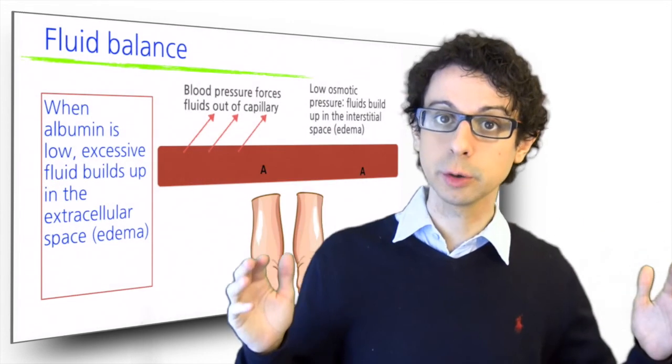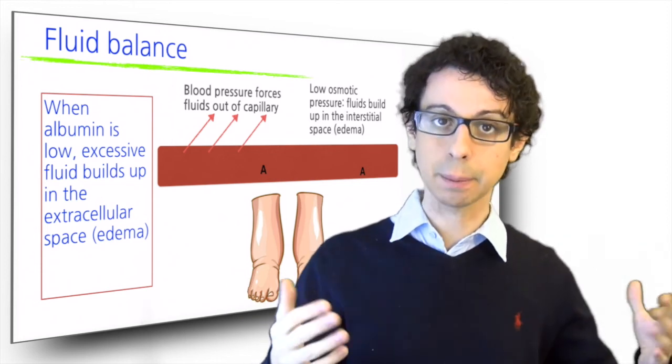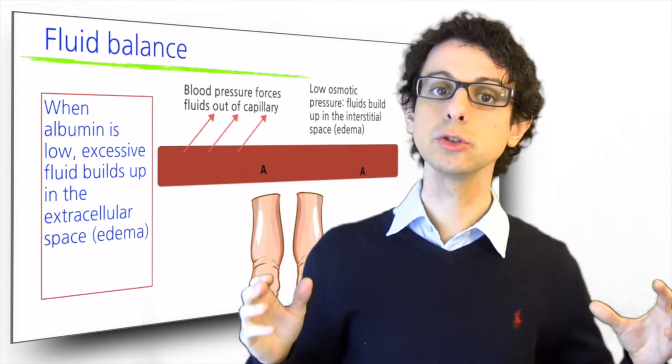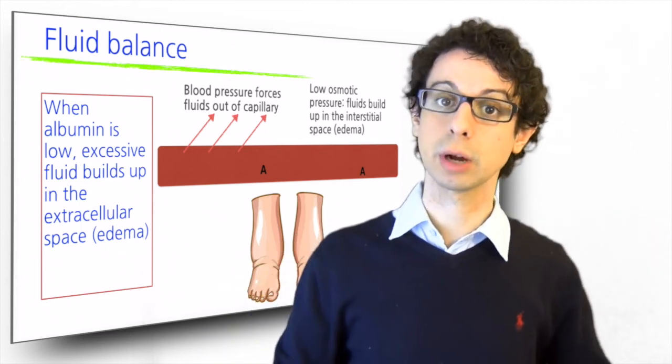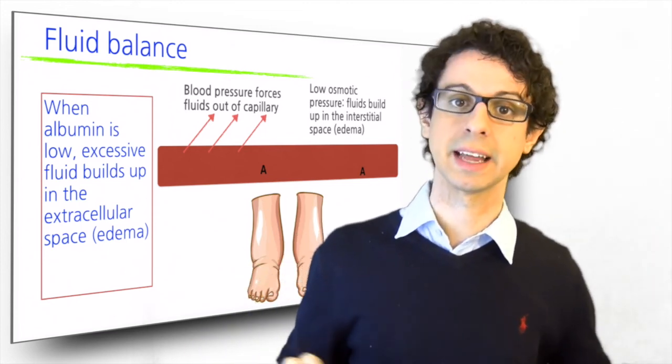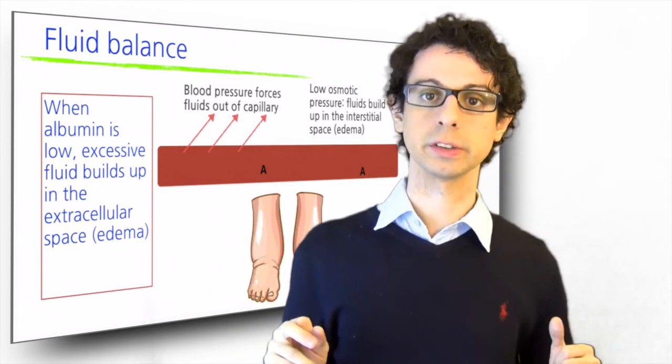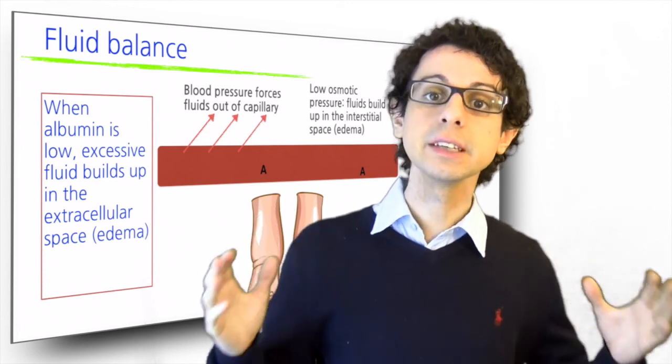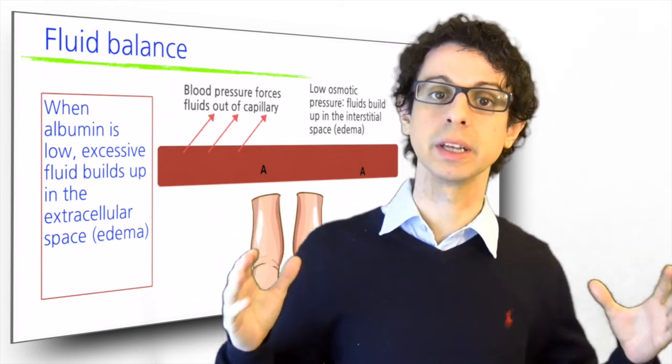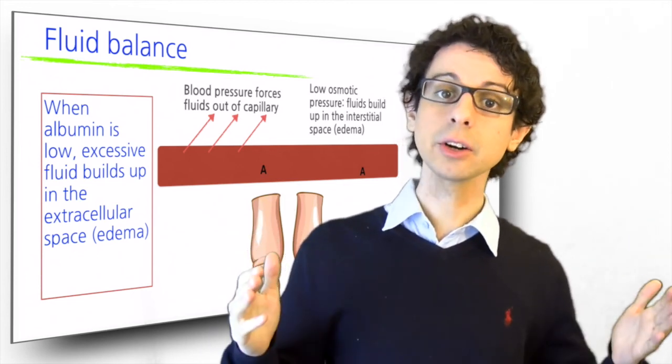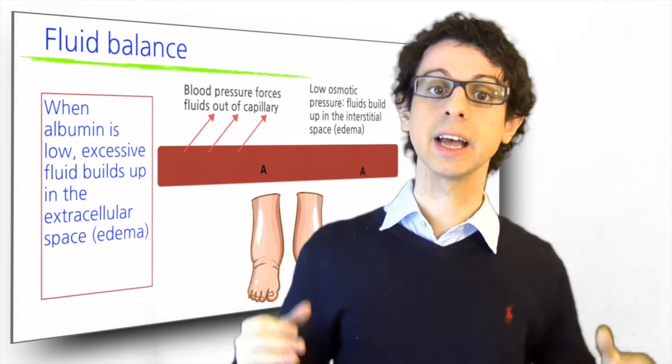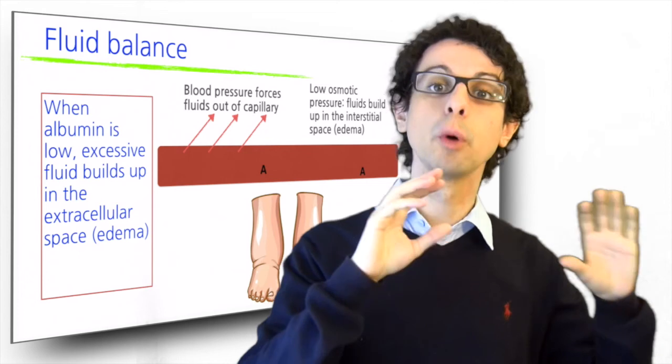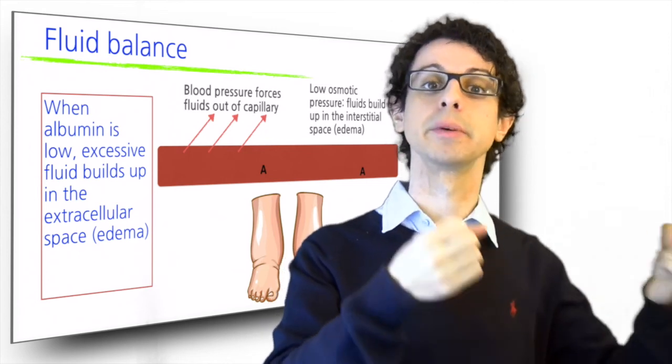If we don't have enough albumin, fluids will start building up in the interstitial space, which is what we call edema. And this usually happens first in the lower extremities because gravity doesn't help. Edema has many possible causes, but one of them is protein deficiency. You simply don't have enough albumin in your bloodstream. Another cause that you can easily understand is high blood pressure, which pushes out of the capillaries more fluids than proteins can bring back in.